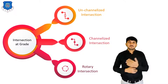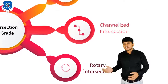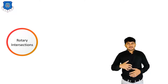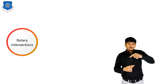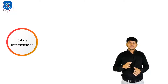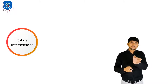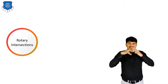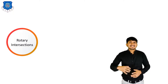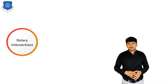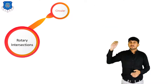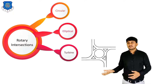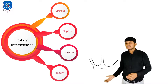Now let's move to the third type of intersection at grade which is rotary intersection. A rotary intersection is a specialized form of intersection at grade in which traffic moves in one direction around a central island. For the keep-to-the-left rule, vehicles approaching the intersection are forced to move around the central island and wave out to the rotary into their respective desired direction. Various types of rotary intersection are: circular rotary intersection, elliptical intersection, turbine type intersection, and tangent intersection — all four types based on their shapes.